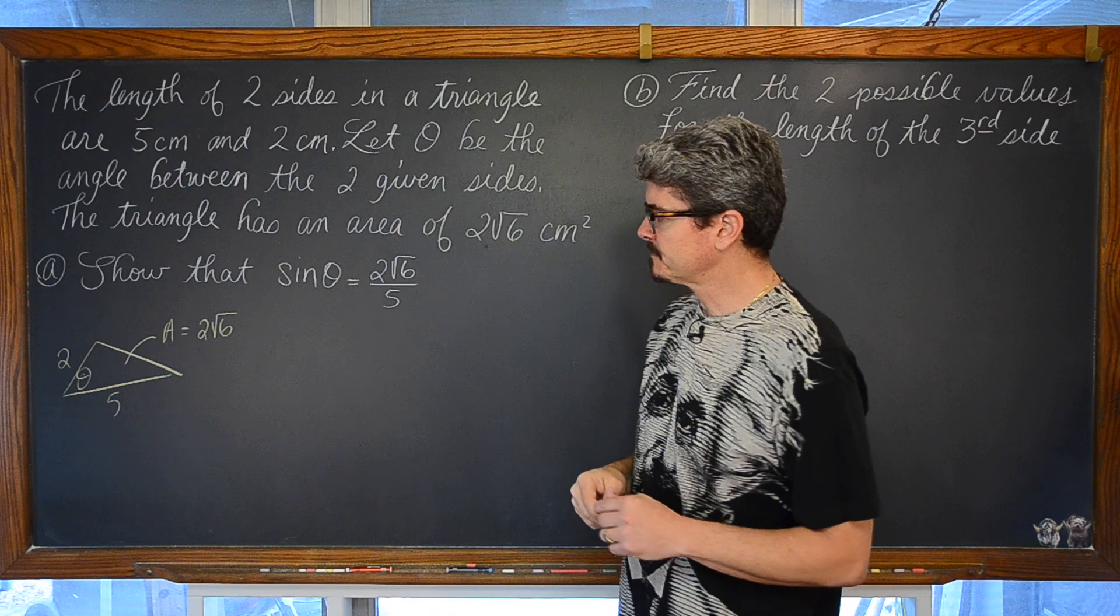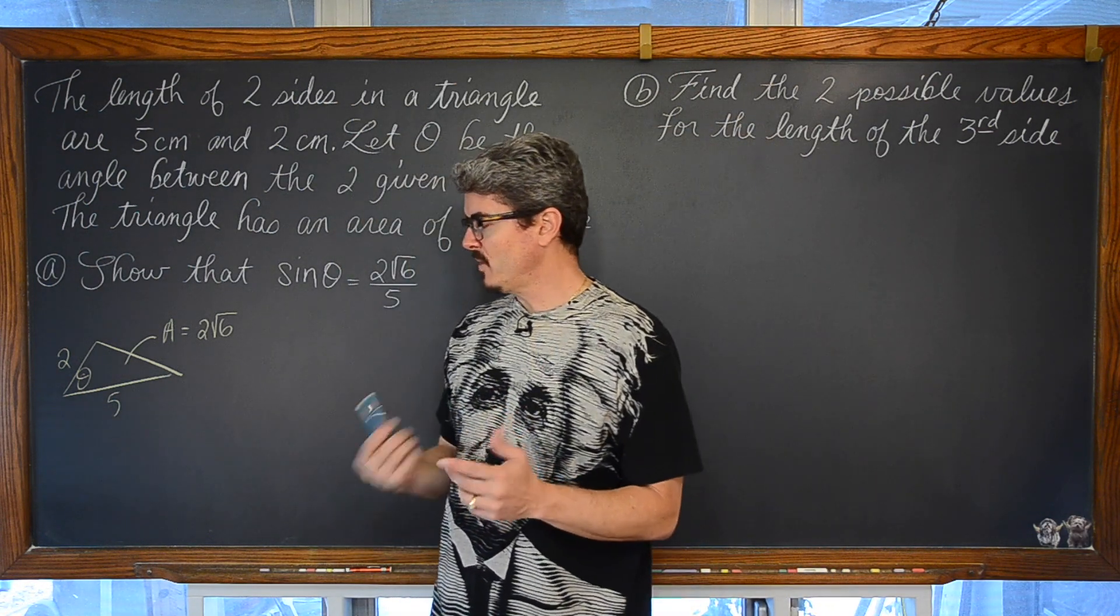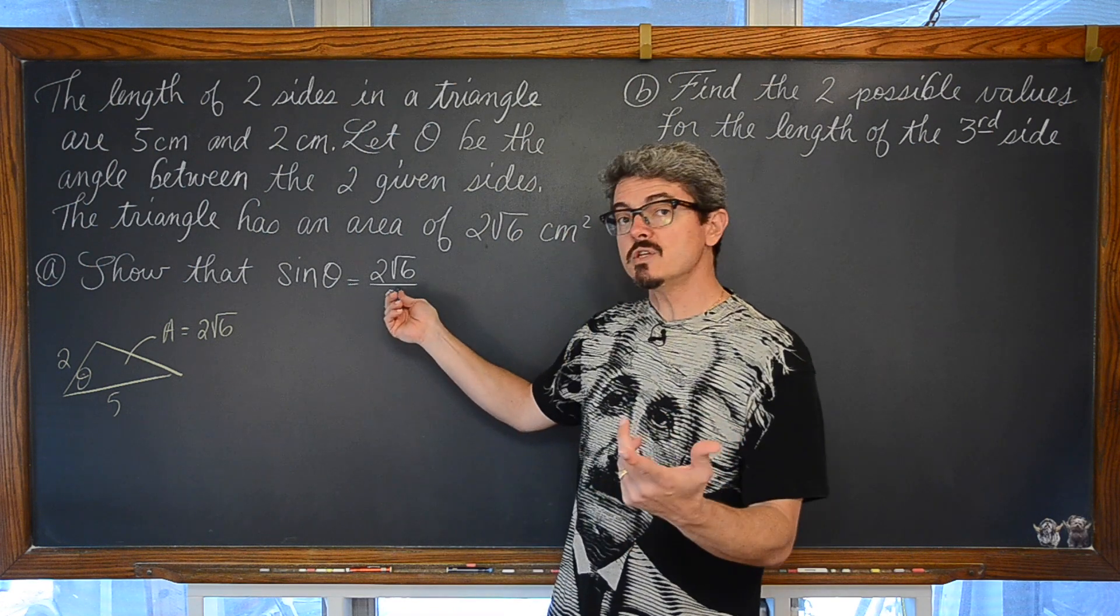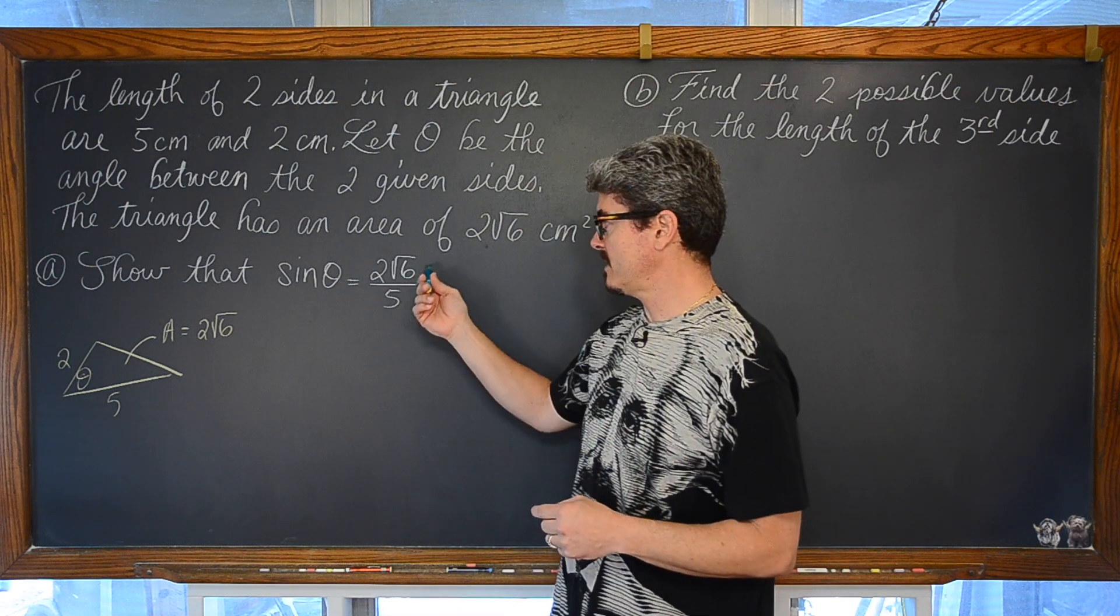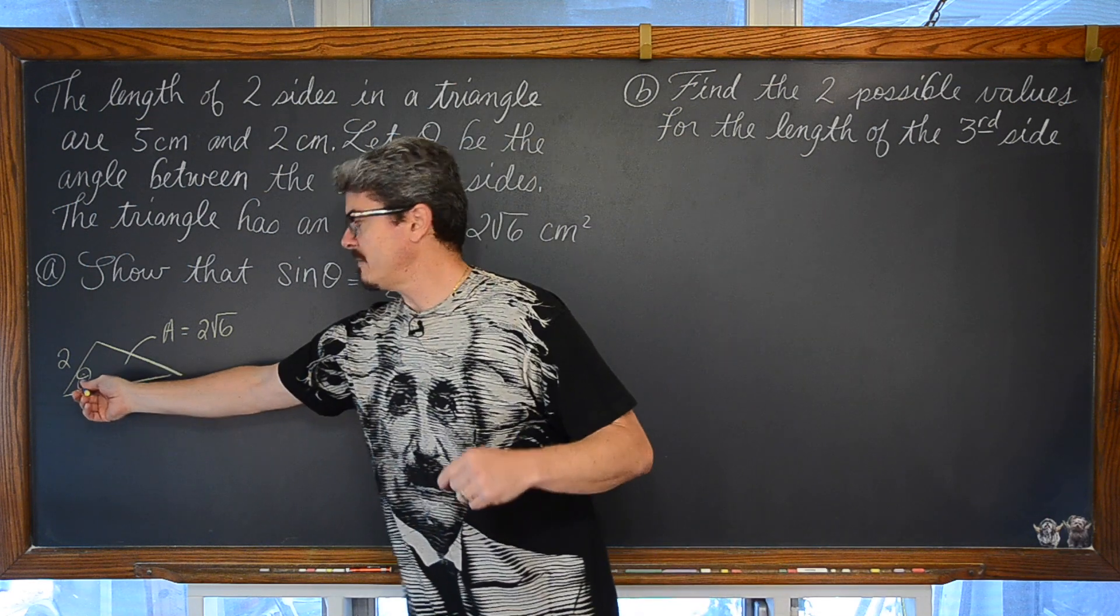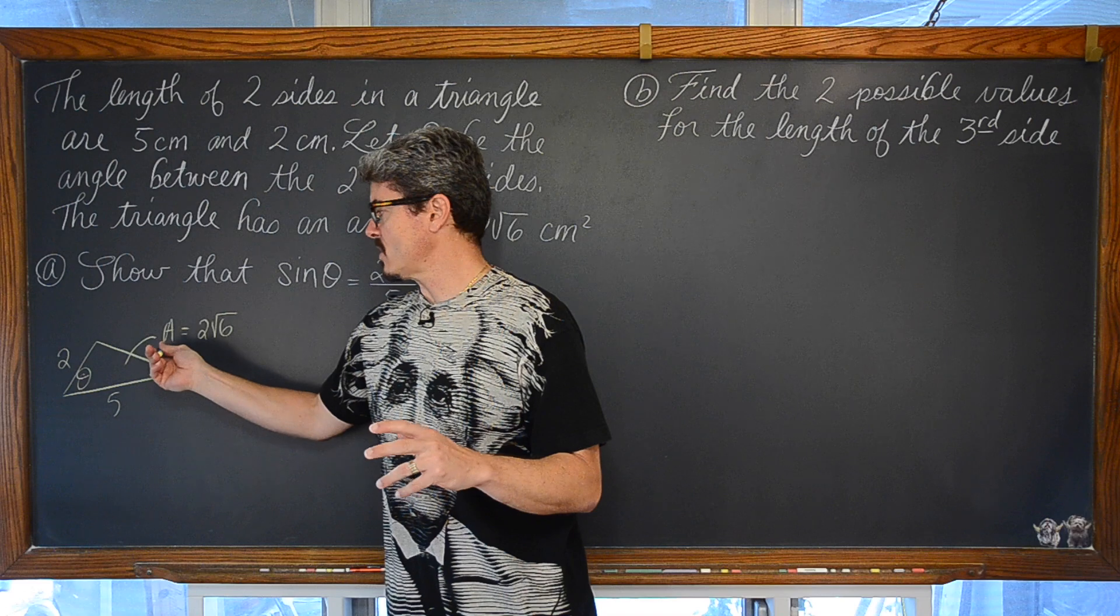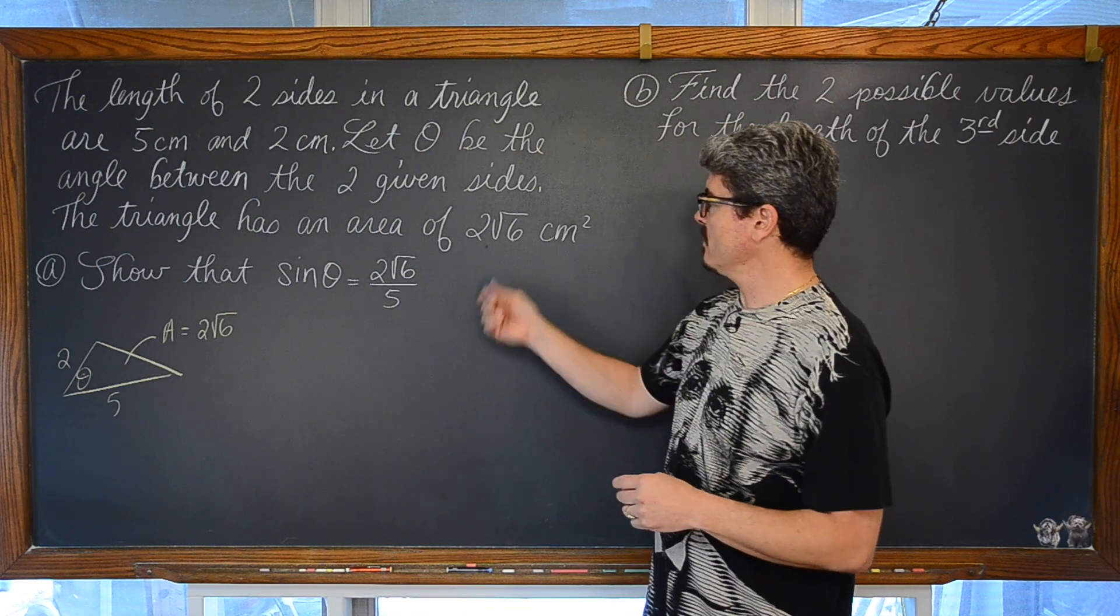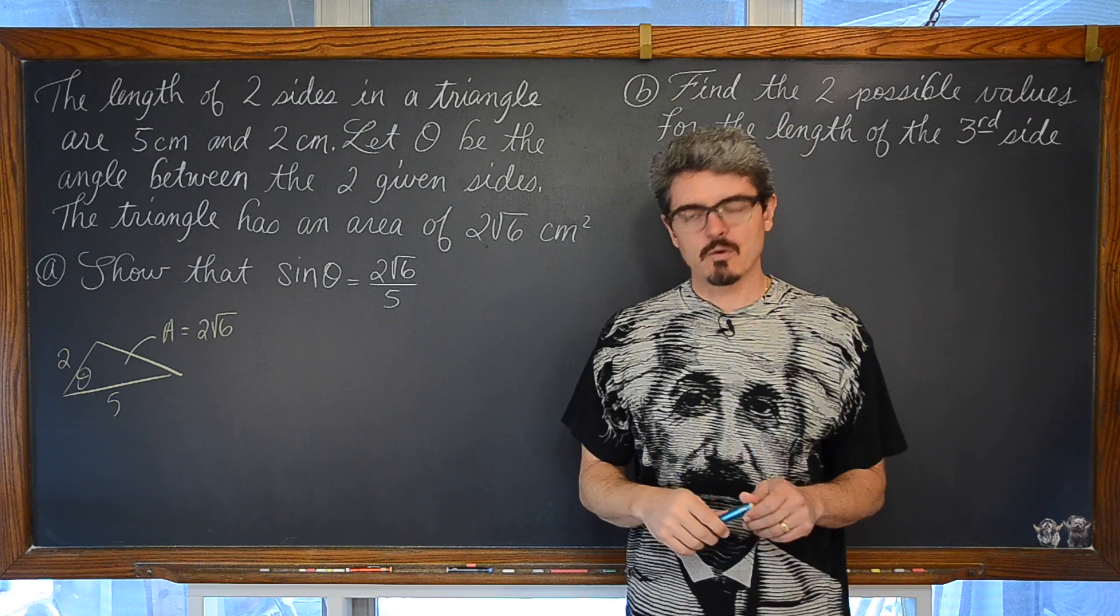Now, we don't have a fixed theta per se. We have a ratio for theta, the sine of theta we are going to show that is equal to 2 square root of 6 over 5, but that might possibly take on some multiple values opening the door for a couple of different triangles that can give us the same area of 2 square root of 6.